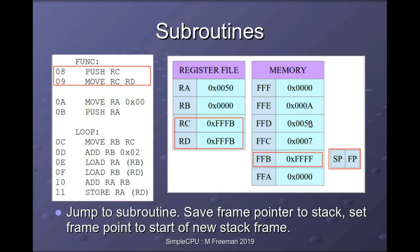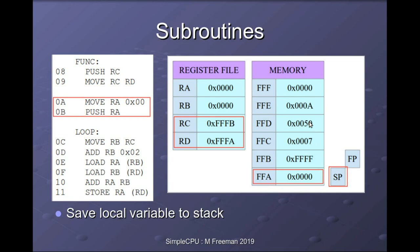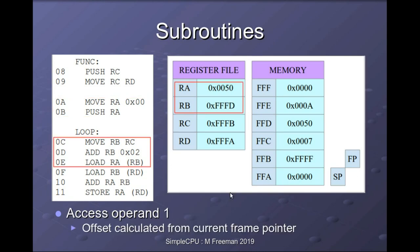The next thing inside our function is to reserve space for a local variable on the stack. We load the value zero into register RA and push that, so the stack pointer is decremented to the next location and updated with that value.